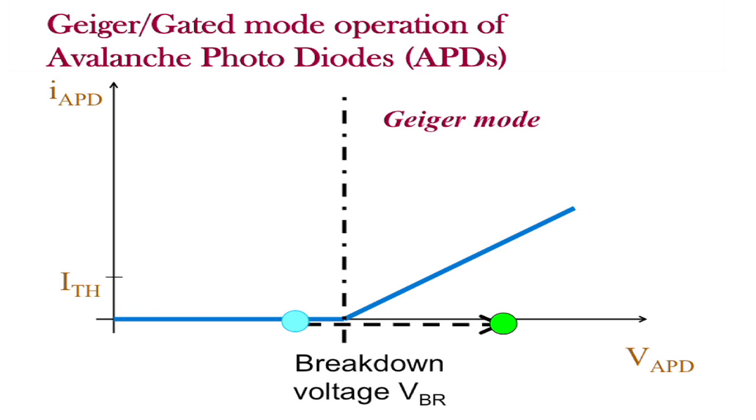If a photon impinges on the APD, then an avalanche effect generates a large current. This generates the detection event.